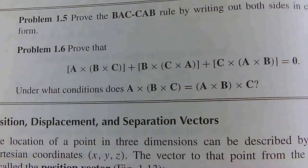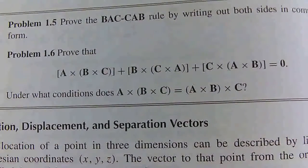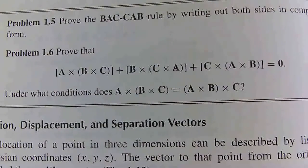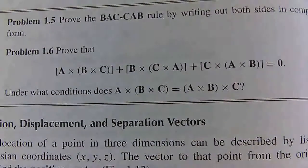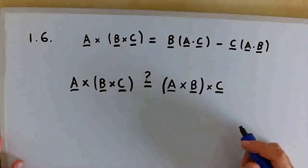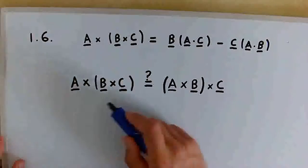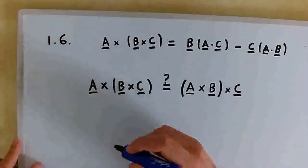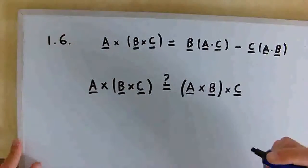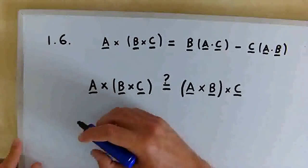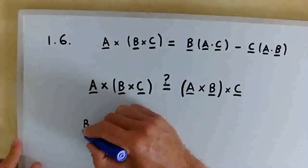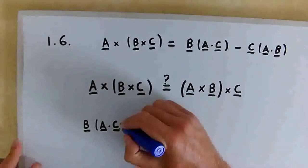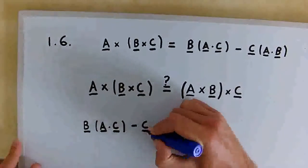Now we can move on to the second part of this question, which asks: under what conditions does A cross (B cross C) equal (A cross B) cross C? The left-hand side is very familiar, so we can write this out using the BAC minus CAB rule.